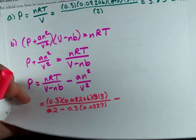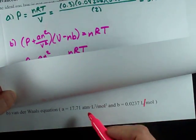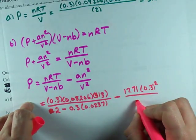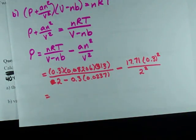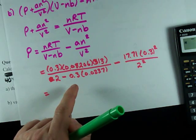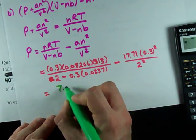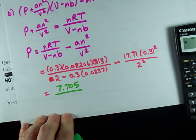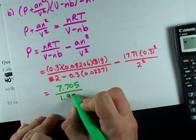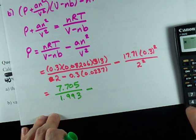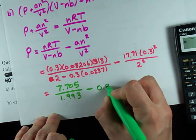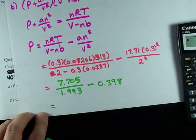A turns out is 17.71 atmospheres liters squared per mole squared, which will cancel out with these units. My number of moles again was 0.3, and my volume again was 2. Now I'm going to do this piece at a time to help you guys with the math. 0.3 times 0.08206 times 313 gives me 7.705 on top. And on bottom I have 2 minus 0.3 times 0.0237, that's 1.993. And what I'm going to subtract is 17.71 times 0.3 squared divided by 2 squared, which is 0.398.